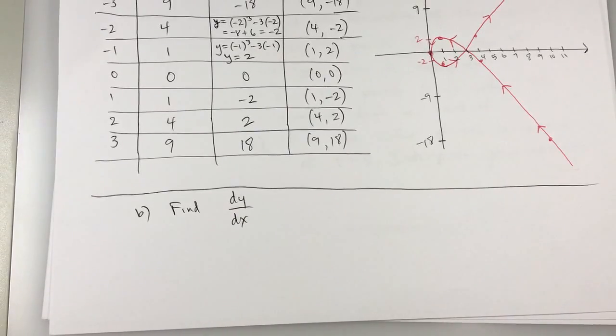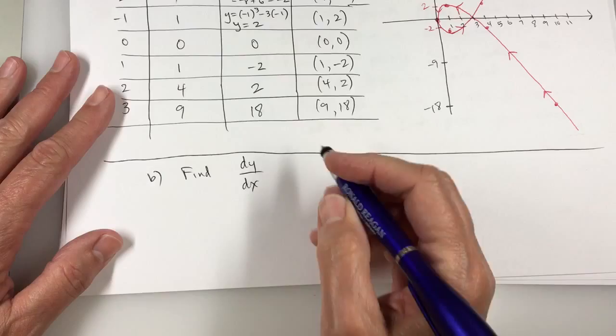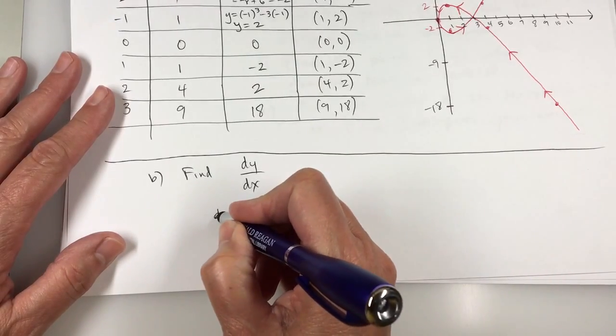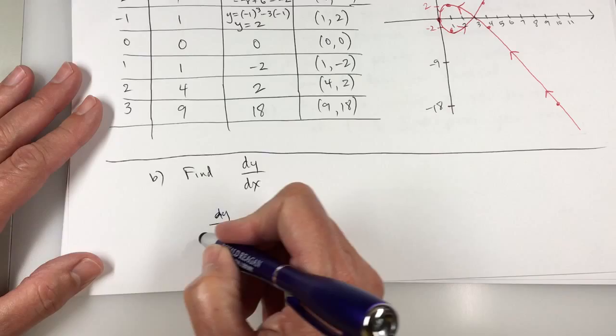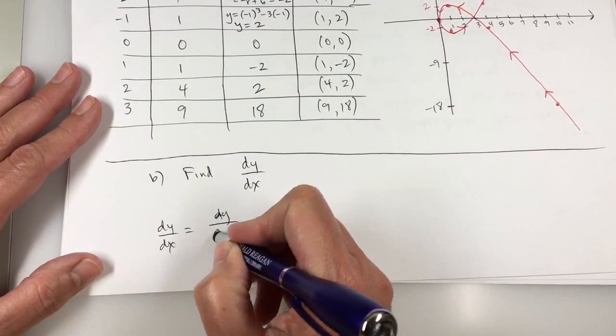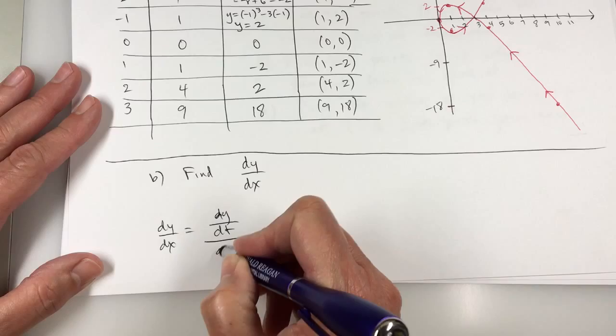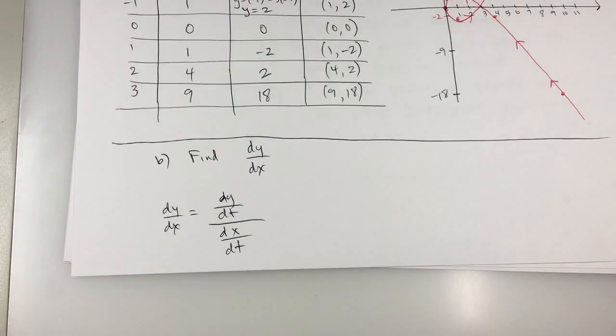Here the independent variable is t. So they'll do this. They show this in the book dy over dx equals dy over dt over dx over dt with the differentials.